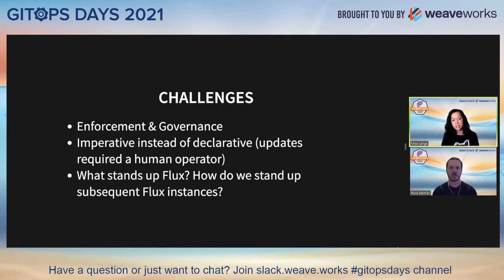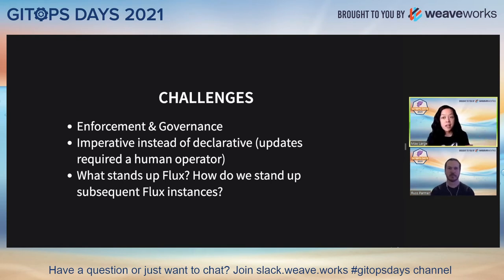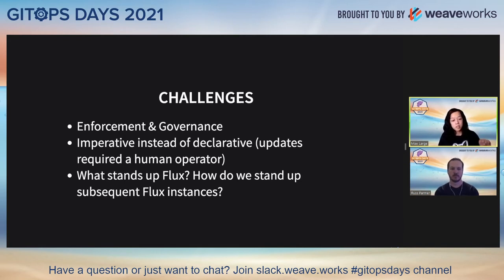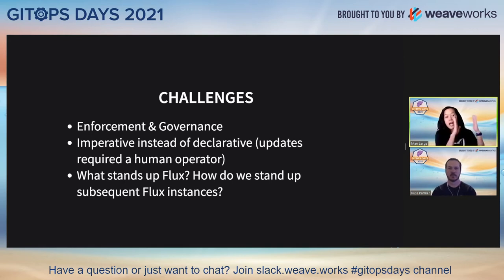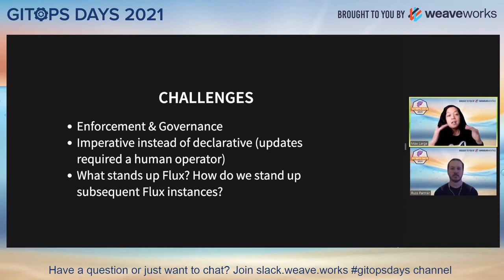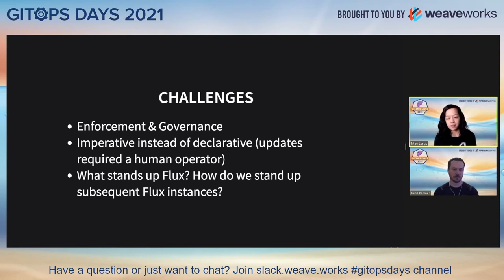Last and certainly not the least, we needed a clear definition on what stands up Flux. There are varying Flux instances — Flux per namespace, Flux at the cluster level. We needed clear guidance on who's responsible for each of these Flux instances. Also, after our initial GitOps rollout, we got this question quite a bit: as a consumer, how do I bring in additional config repos, which would mean tying that to additional Flux instances? Because in Flux 1, it's a one-to-one mapping — one config repo, one Flux instance.